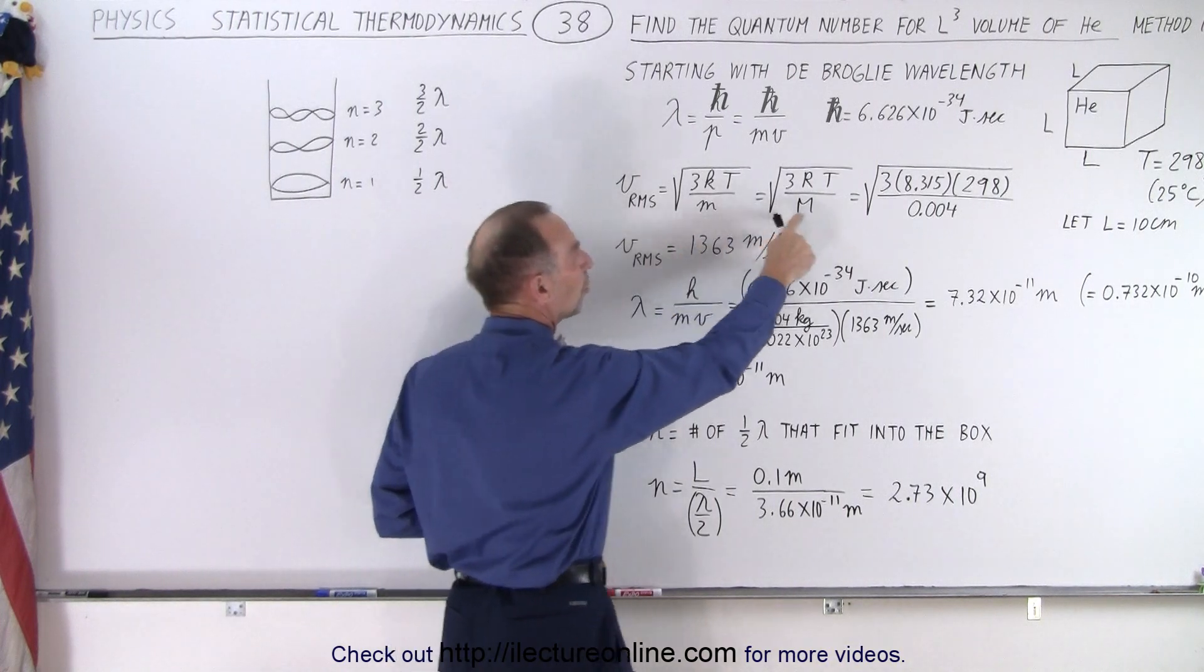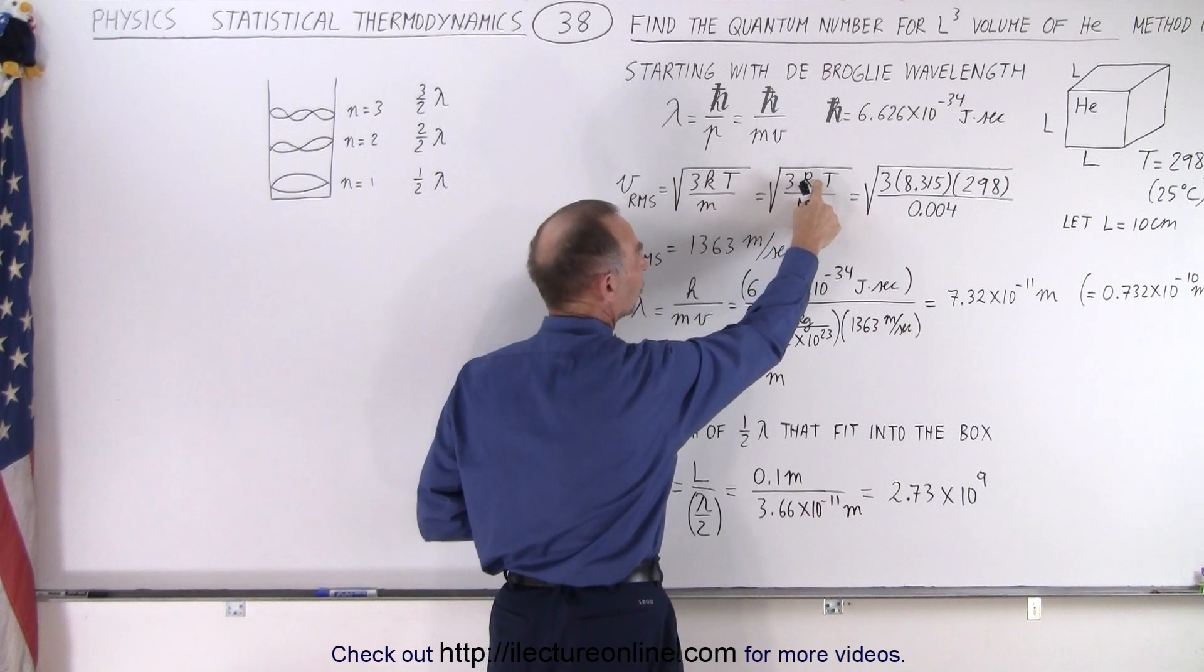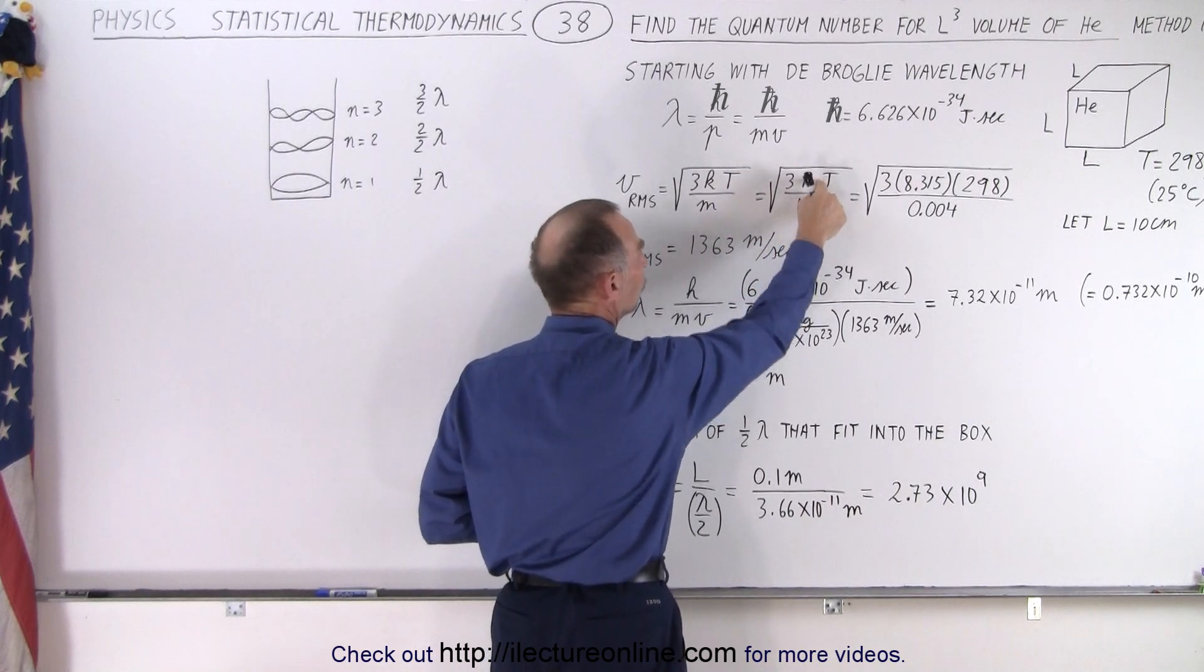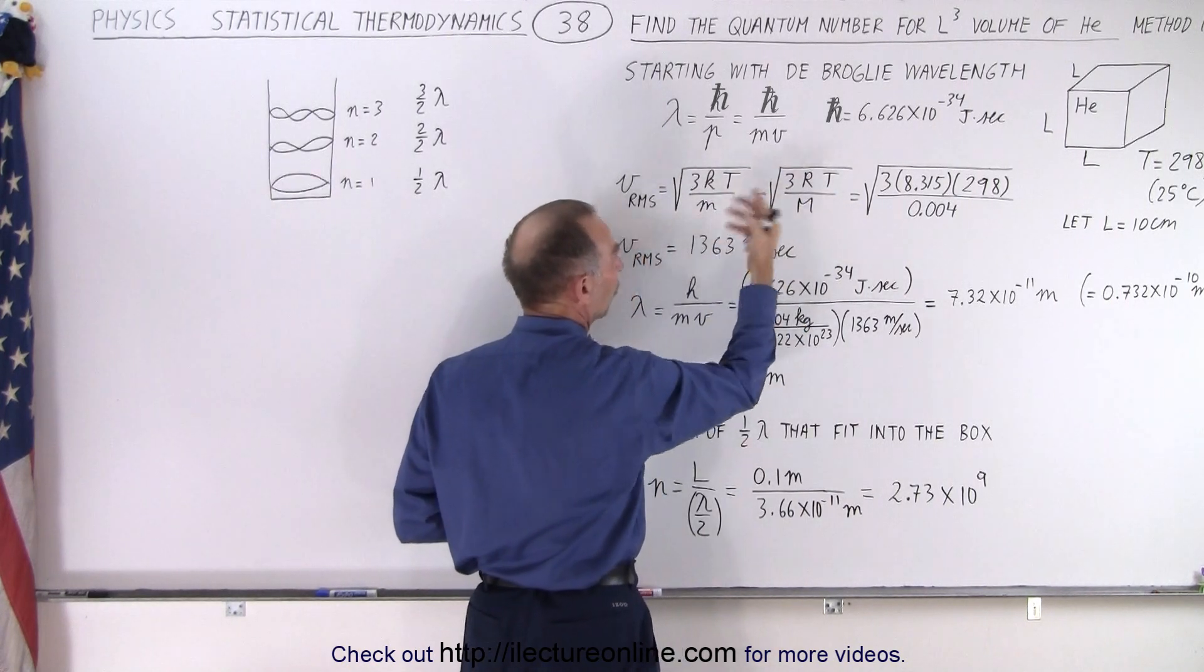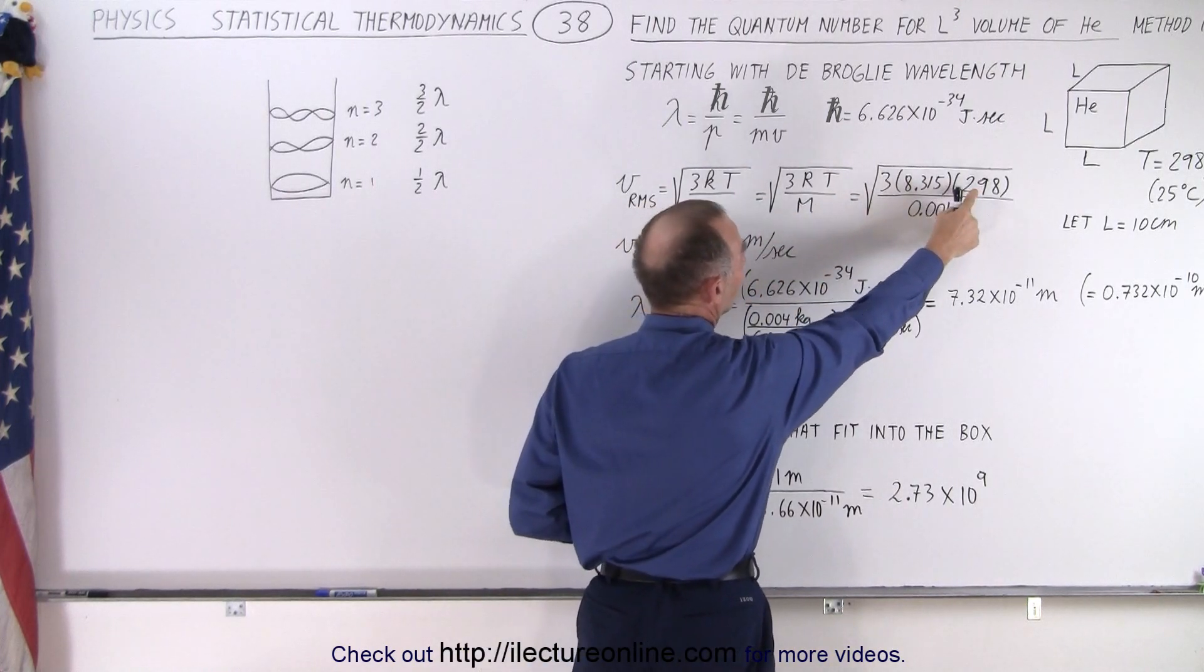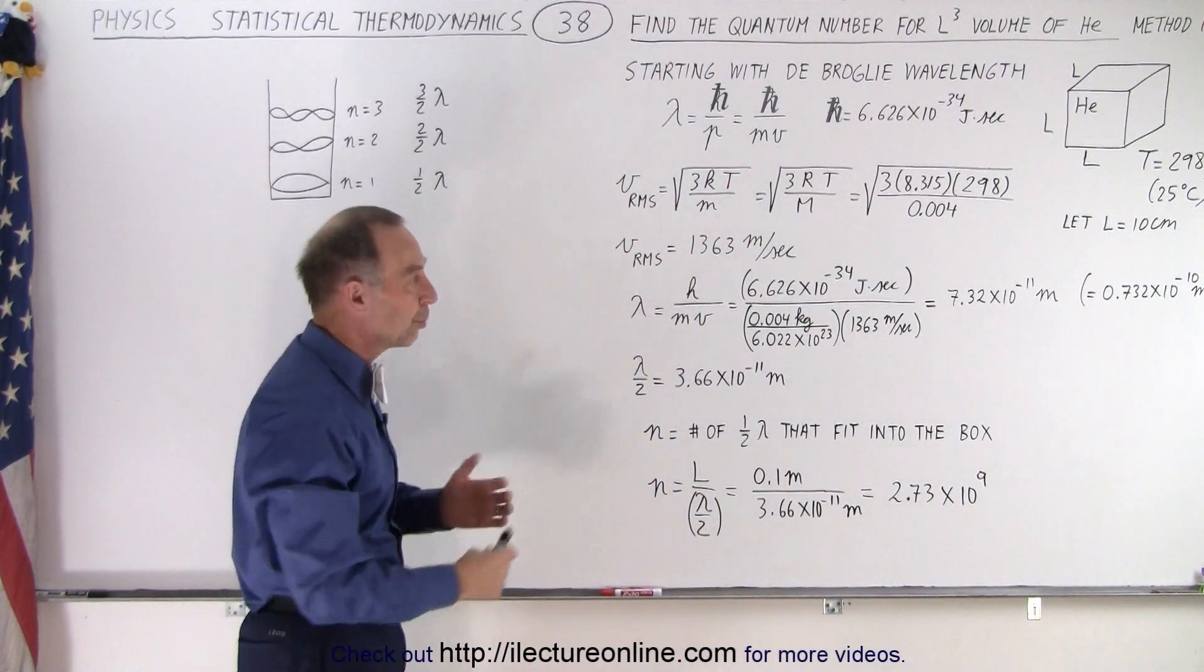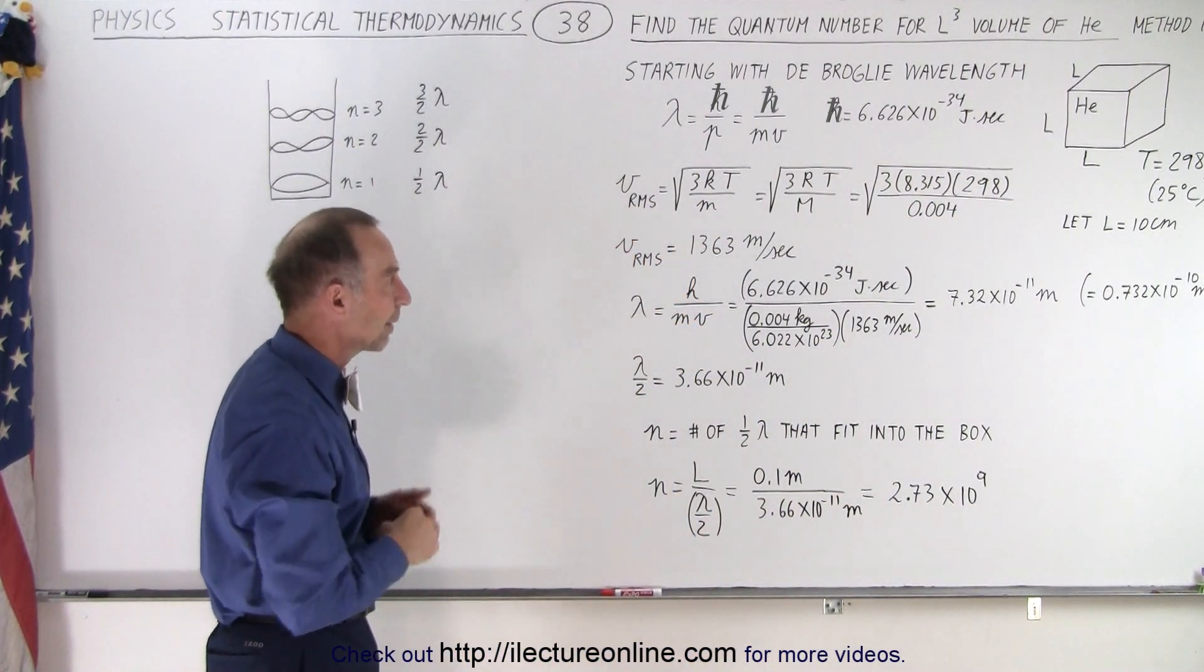It's easier to turn that into the molar mass and take Boltzmann's constant and turn that into the gas constant because essentially this ratio here is the same as this ratio. So when we plug in the values, R being 8.315, temperature 298 Kelvin, and the molar mass is 4 grams per mole, or 0.004 kilograms per mole.